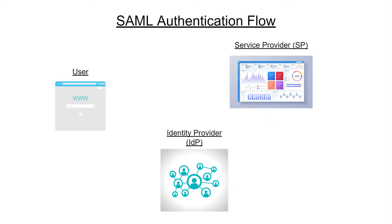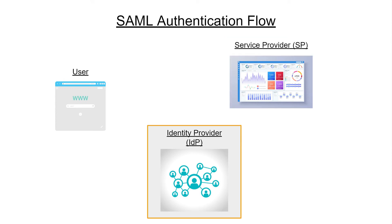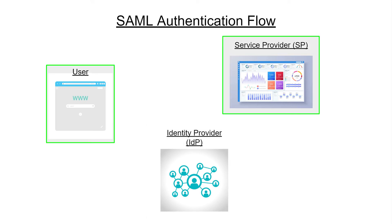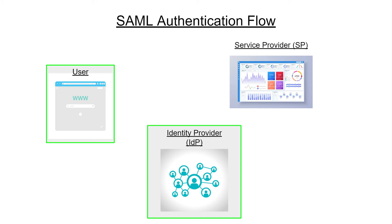When we talk about the SAML authentication flow, there are two possibilities with regards to where the flow begins and who initiates it. It can either be initiated by the service provider or the identity provider. SP initiated flow sees direct interaction from the user by requesting access to an SP's application. IDP initiated flow, on the other hand, sees the user first logging into an IDP portal, then selecting from a list of trusted, pre-configured service provider applications that are available.